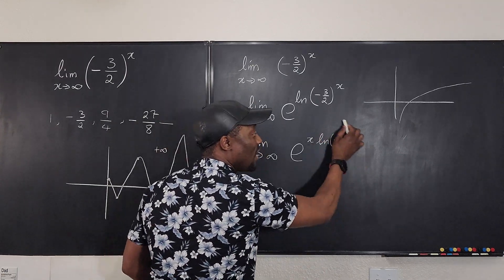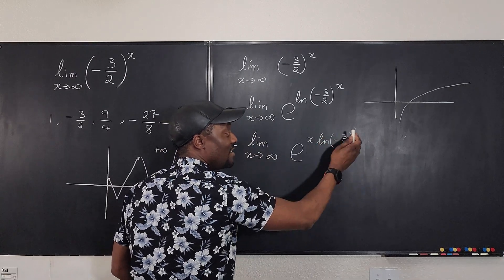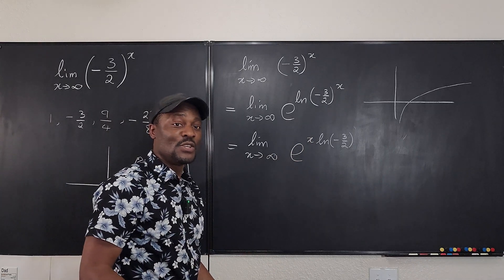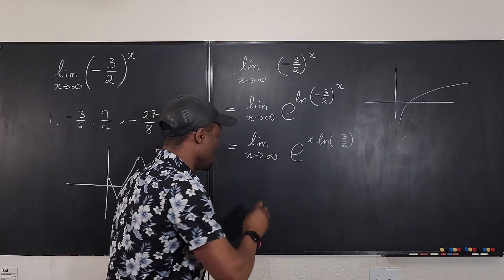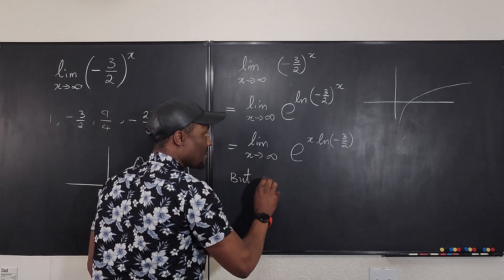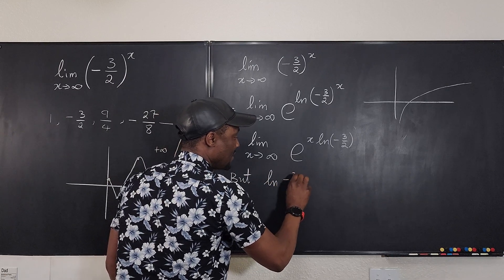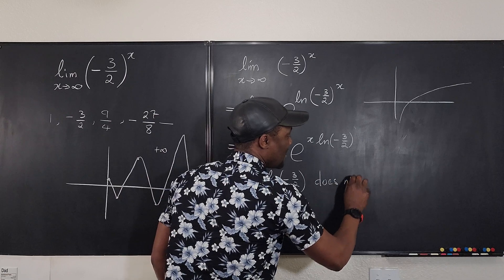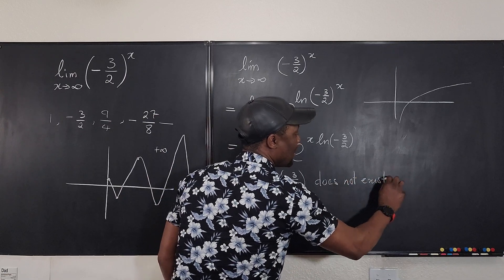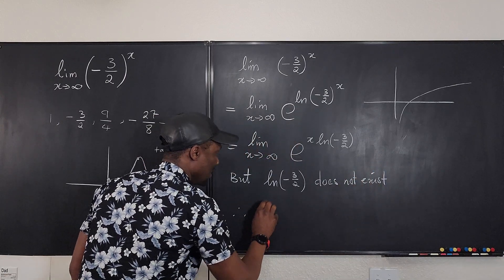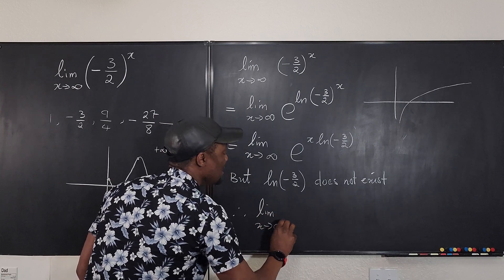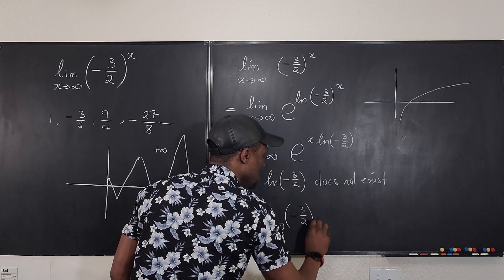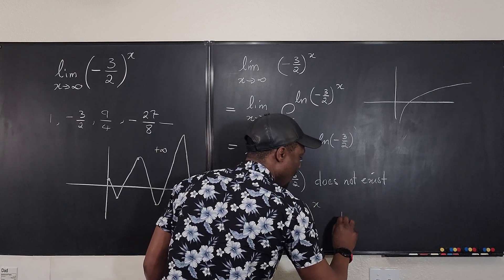Therefore, there's nothing to plug in here. There's nothing to get here. And therefore, there's nothing to get here no matter what x becomes. So this does not exist. So you say but natural log of negative 3 over 2 does not exist. Therefore, the limit as x goes to infinity of this guy negative 3 over 2 to the x does not.